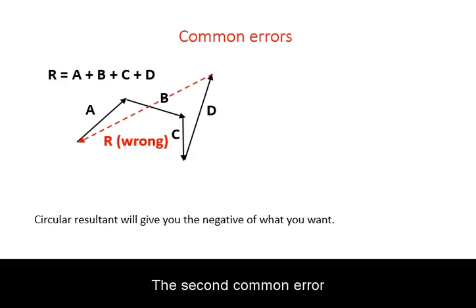The second common error is the circular resultant. You draw the vectors successively tail to head, but then you draw the resultant from the head of the last vector back to the tail of the first vector. This will give you the correct magnitude, but opposite direction to what was asked for.